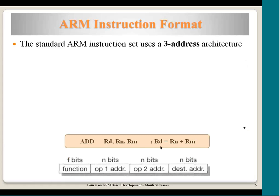Let us look at how a particular instruction is encoded. A sample instruction is: ADD RD, RN, RM — this is the normal assembly convention. ADD indicates addition; RN and RM are the two source operands, they get added and the result is placed into RD, the destination register. These registers can be anything from R0 to R15, though R15 has special restrictions as it is the program counter.